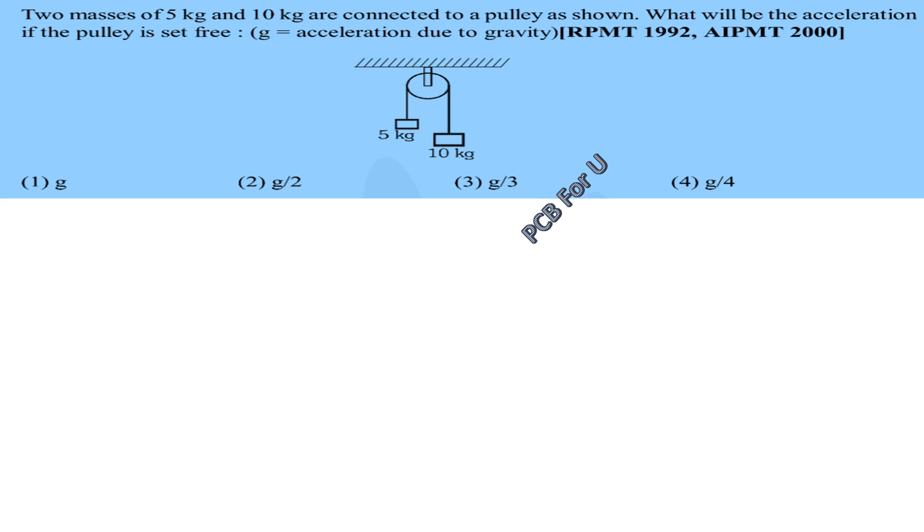Two masses of 5 kg and 10 kg are connected to a pulley as shown. What will be the acceleration? The pulley is set free, acceleration due to gravity.